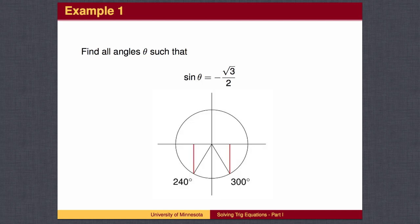Here is a simple example. We can use the unit circle to find the two angles between 0 and 360 degrees where the sine value is negative square root 3 over 2, namely 240 degrees and 300 degrees.